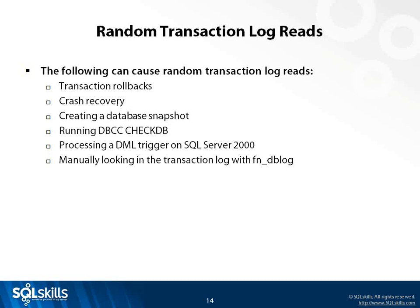Whenever you do a DBCC CHECKDB, it creates a database snapshot under the covers, which then runs crash recovery doing rollbacks — so random reads. On SQL Server 2000, DML triggers access the before-and-after tables by reading the transaction log. That's no longer the case from SQL Server 2005 onwards, where it uses the versioning mechanism that underpins snapshot isolation to do DML trigger body processing. And of course you can manually look inside the transaction log using the undocumented fn_dblog command. So in summary, there are sequential writes, sequential reads, and random reads.